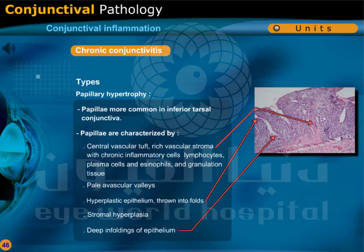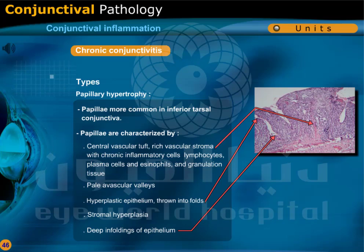Papillary hypertrophy: the papillae are more common in the inferior tarsal conjunctiva. Papillae are characterized by a central vascular tuft, rich vascular stroma with chronic inflammatory cells including lymphocytes, plasma cells, and eosinophils, also granulation tissue, pale avascular valleys, hyperplastic epithelium thrown into folds, stromal hyperplasia, and deep infoldings of epithelium.